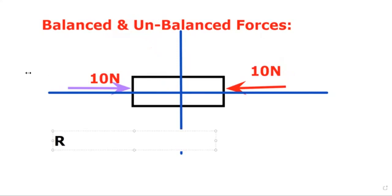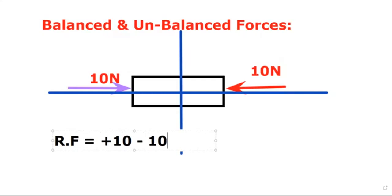The resultant force is: my force is going along the positive x-axis direction, so it would be +10N. And my friend is applying 10N force along the negative x-axis direction, so that would be −10N. So the answer is 0N.